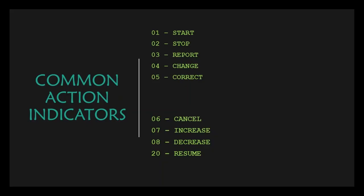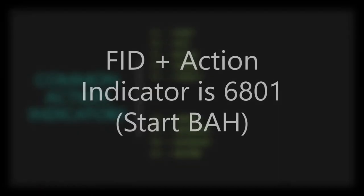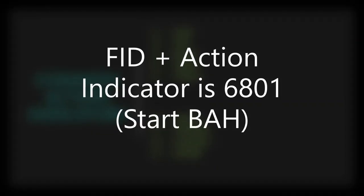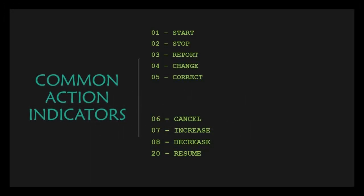Moving on to common action indicators. For example, 01 means start. If you want to start somebody's BAH, the input would be 6801 — that means start the service member's BAH. Be mindful: you don't have capabilities to start BAH using MMPA with the JJAA verb — this is inquiry only. But you'll know when something was started, stopped, changed, corrected, or canceled based on what you see in the FID line. Common action indicators include: start, stop, report, change, correct, cancel, increase, decrease, and resume.